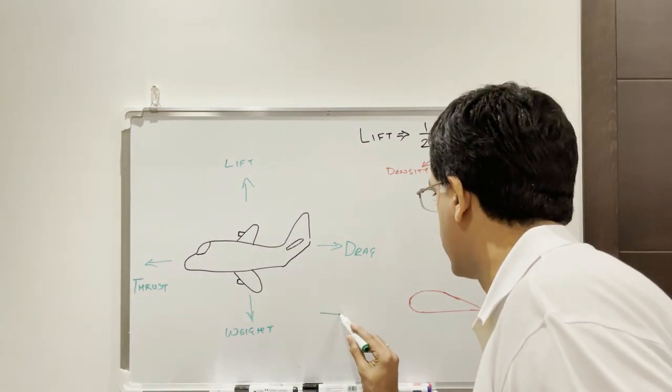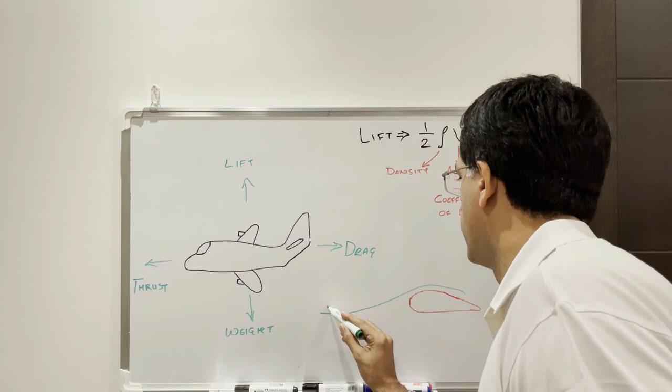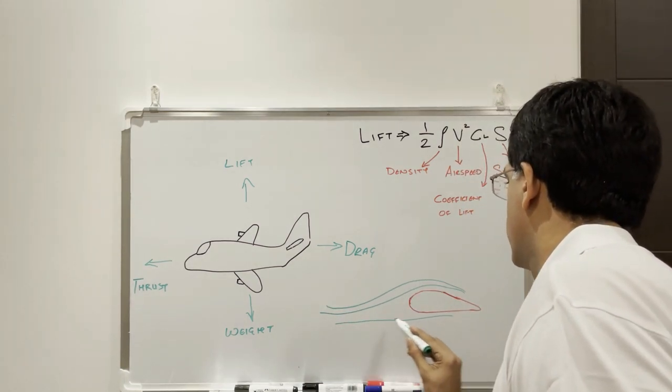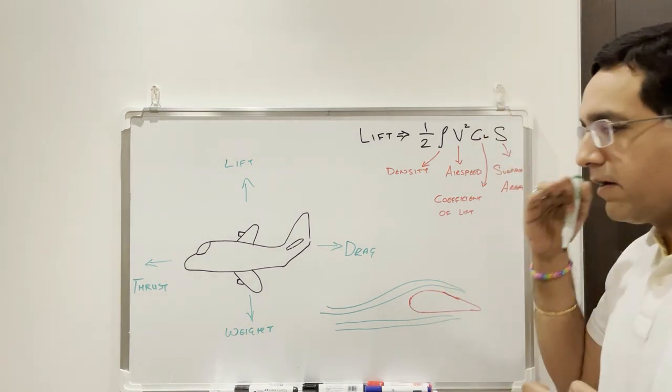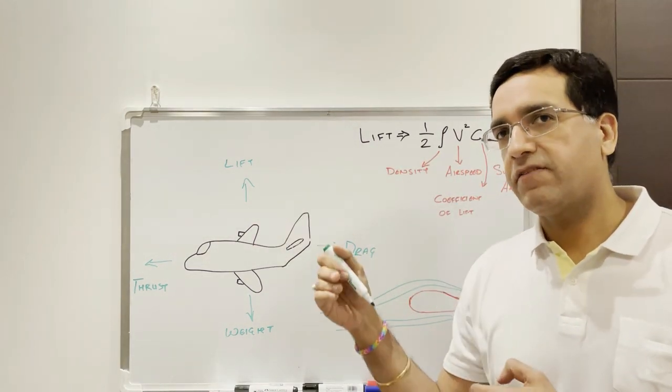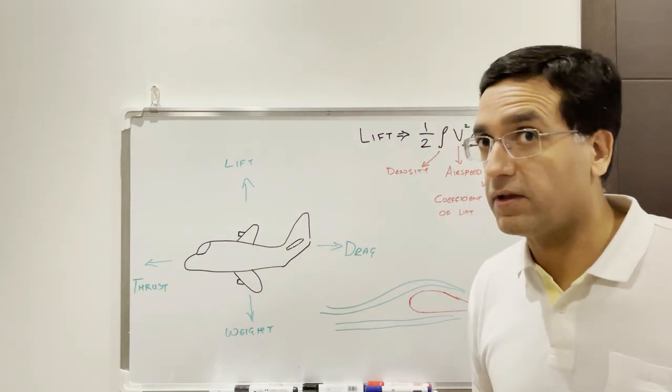So imagine these green lines are the relative airflow. So the aircraft moving through air is being faced by the relative airflow, which is represented by these green lines.